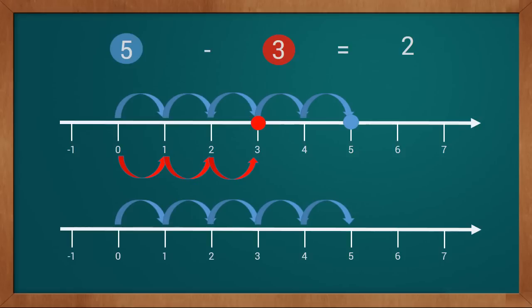We start from five and move three points backwards: one, two, three. We moved three points backward and reached two. So this way we got five minus three equals two.